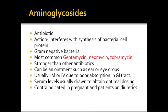Aminoglycosides are antibiotics that interfere with the synthesis of bacterial cell protein and promote death of the bacteria. Usually effective against gram-negative bacteria. The most common medications are gentamicin, neomycin, and tobramycin. They are stronger than other antibiotics and generally given when other classes of medications have not worked. These medications can also come in ear and eye drops. Usually given intramuscular or IV due to poor absorption in the GI tract. We have to do serum blood levels to test for optimal dosing. This class is contraindicated in pregnant people and people on diuretics, as both diuretics and aminoglycosides cause the kidneys to work hard, which could put the patient in renal failure.